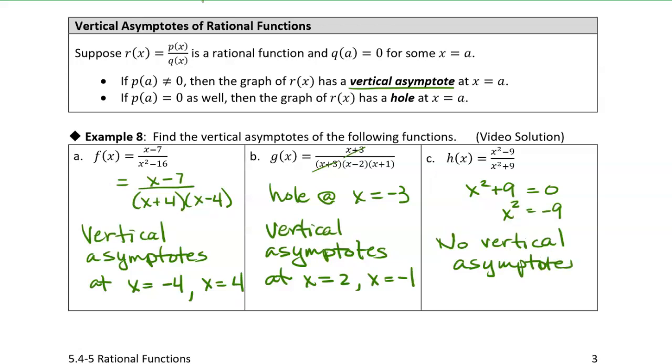All right, so now we've identified where those asymptotes will be, and in the next example we're going to look at using this information to graph a rational function.